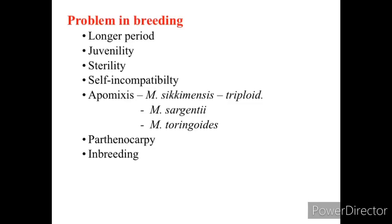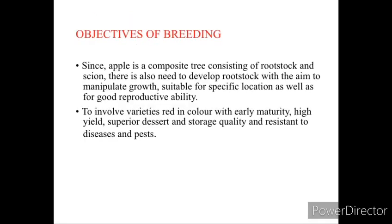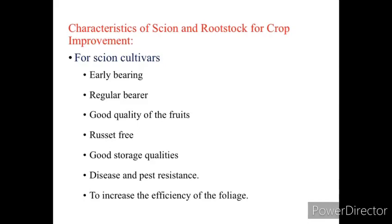Inbreeding is also one of the major problems in breeding of apple. Since apple is a composite tree consisting of rootstock and scion, there is a need to develop rootstock with the aim of manipulating growth suitable for specific locations as well as for good reproductive ability. The second objective is to develop varieties that are red in color with early maturity, high yielding, superior dessert and storage quality, and resistant to disease and pests. The characteristics for scion improvement include early bearing, regular bearing, good quality, russet-free, good storage qualities, and disease and pest resistance.